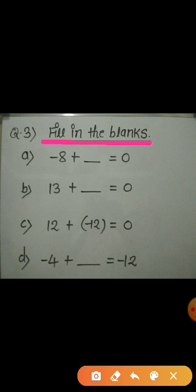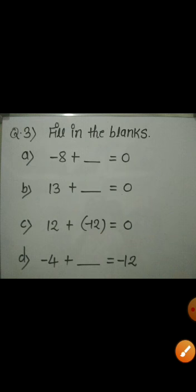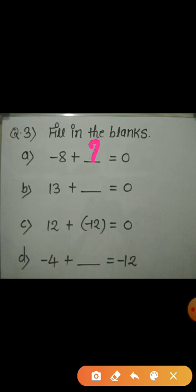Look at the first fill-up. It is given that minus 8 plus fill in the blank is equal to 0. What should we add to minus 8 so that the addition will be 0? We should add plus 8. Minus 8 plus 8 is equal to 0. When two integers are added to each other and give 0, they are called the additive inverse of each other. So here minus 8 and plus 8 are the additive inverse of each other.